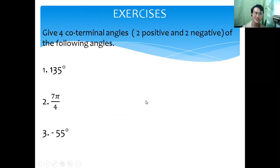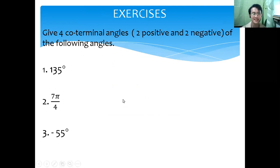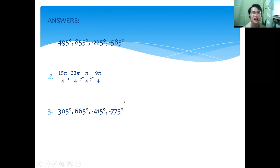Now for the exercises — it's your turn to answer. Give four coterminal angles, two positive and two negative, of the following angles. Here are the answers: for number 1, the answers are 495 degrees, 855 degrees, negative 255 degrees, and negative 585 degrees. Answers for numbers 2 and 3 are also shown.